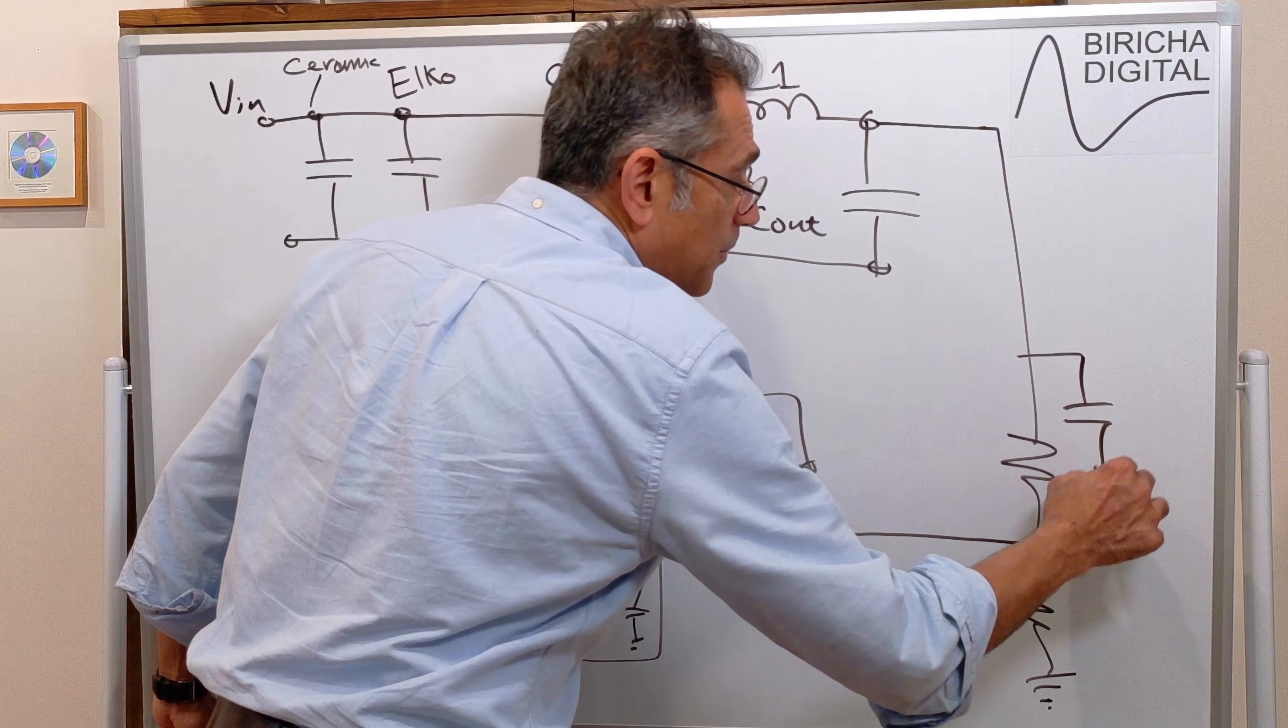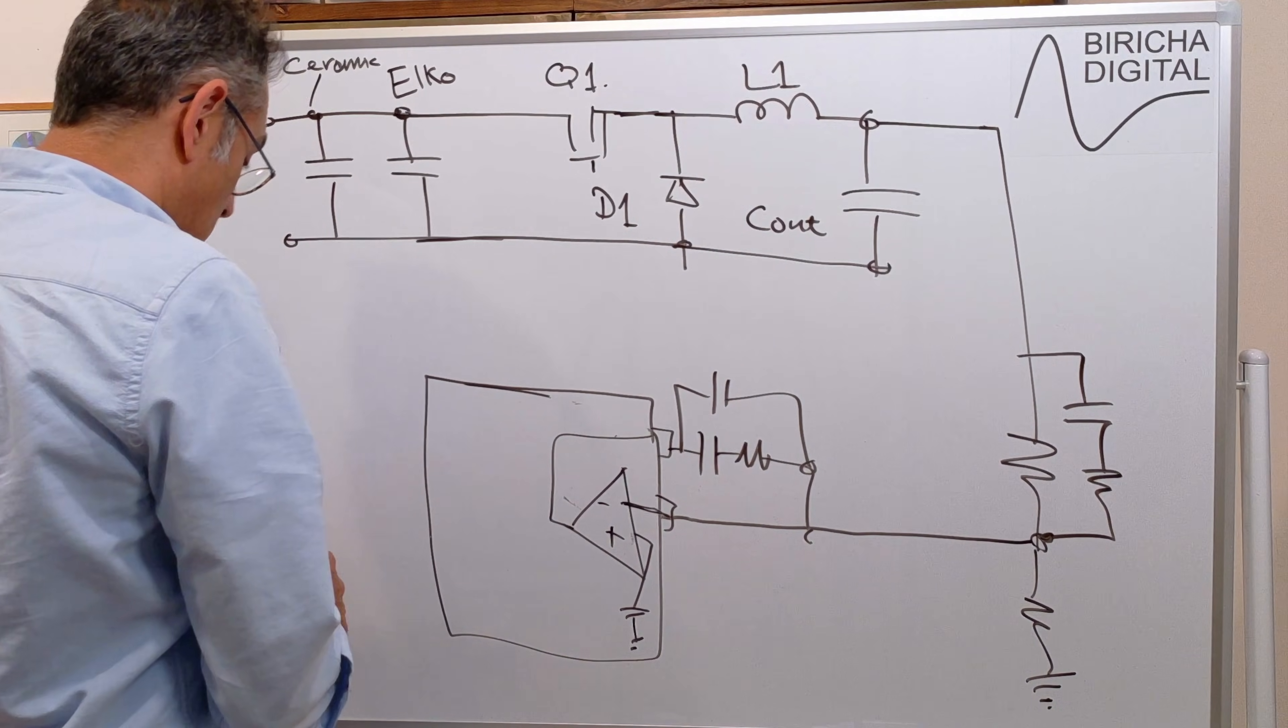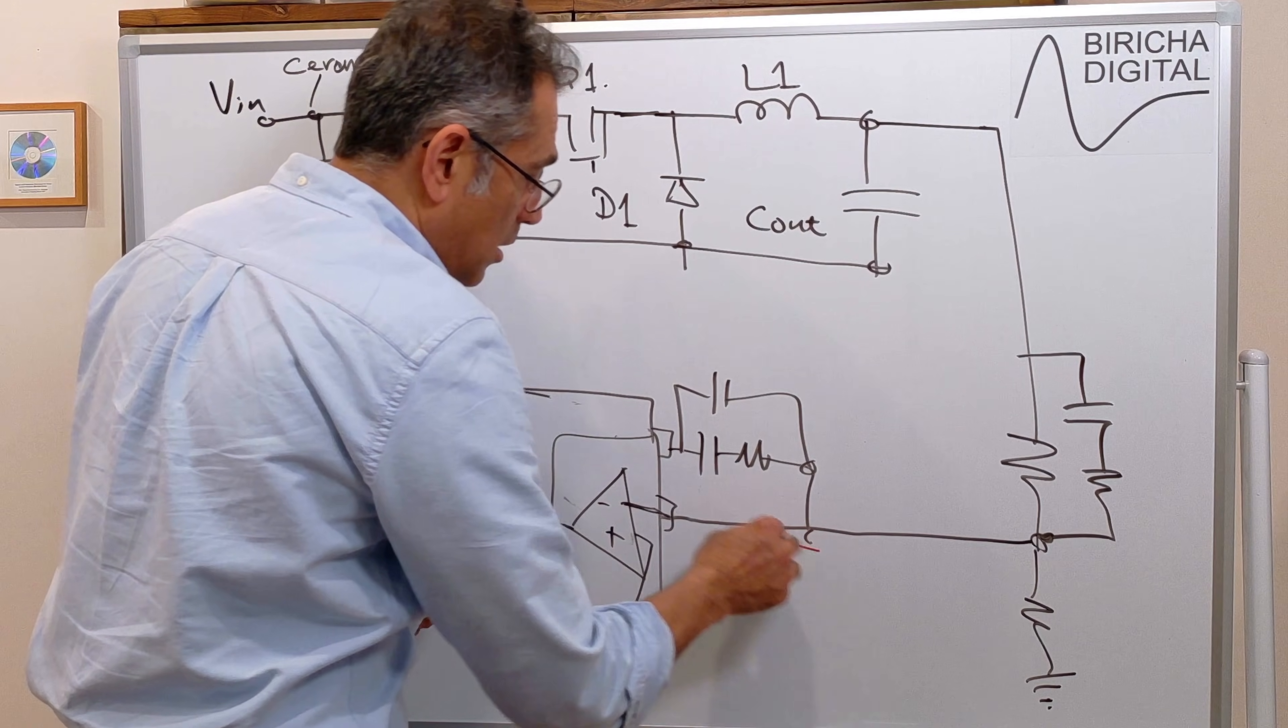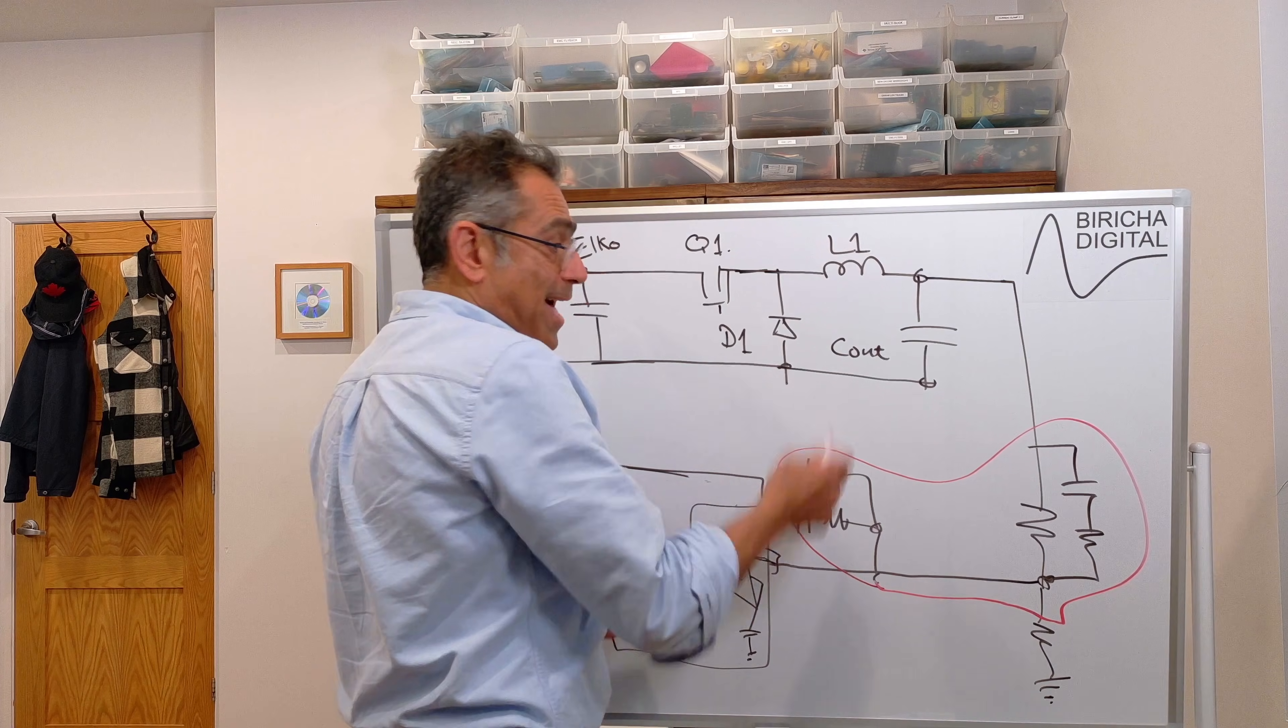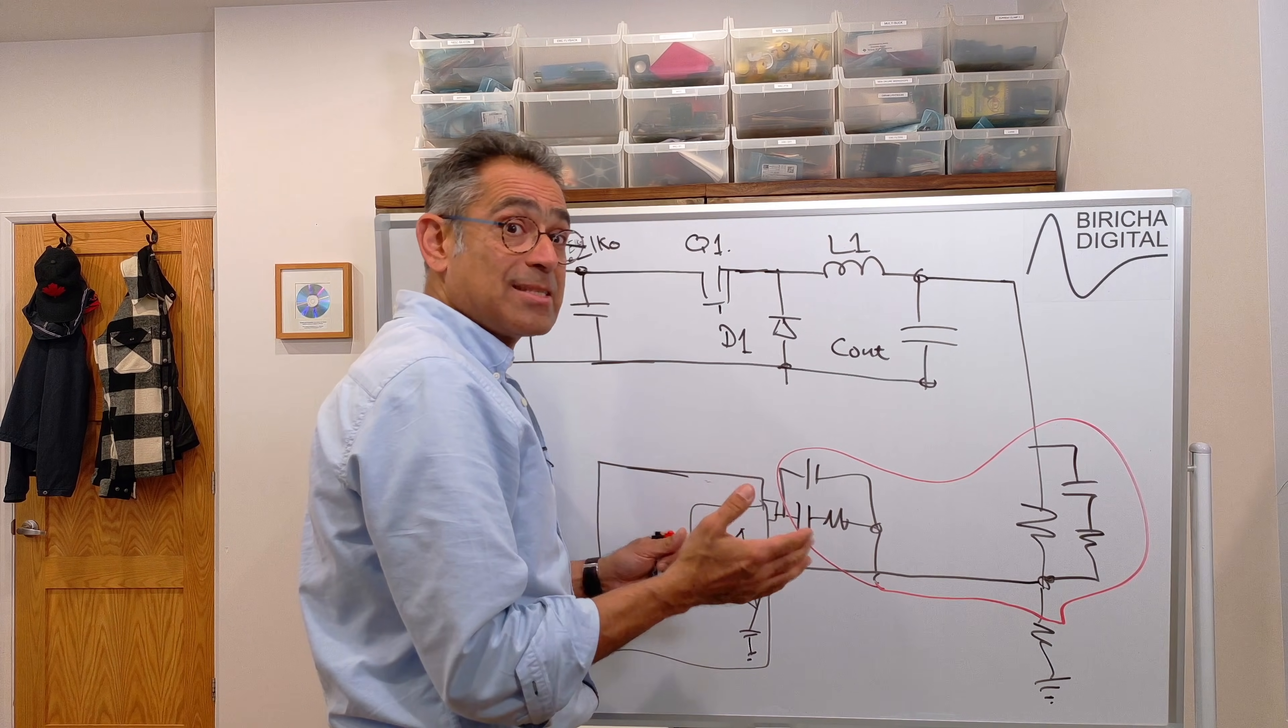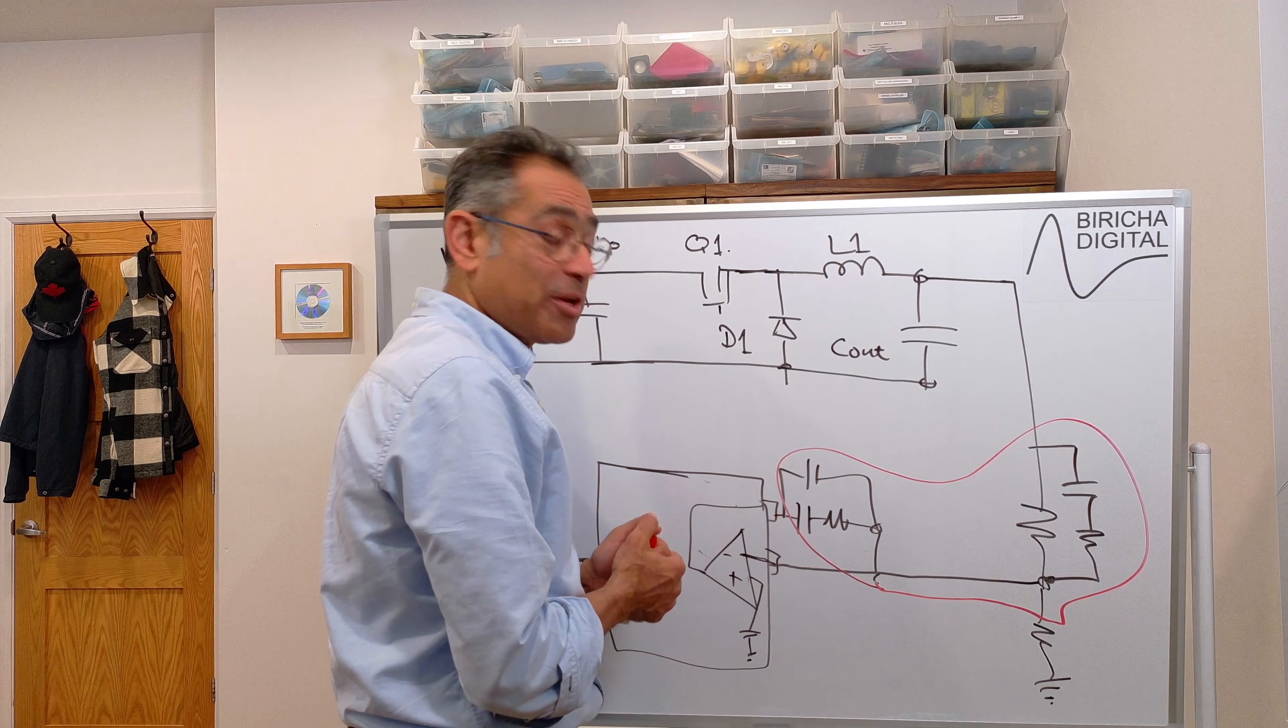For type 3, we have an extra capacitor and resistor. So the compensating components, therefore, are these. And again, not only we will discuss how we calculate these values, we in fact will provide a software tool that calculates them all for you. So we just teach why we place poles and zeros and so on, the way we do.